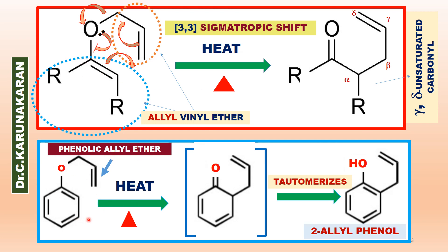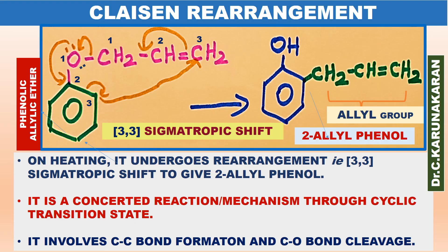Similarly, phenolic allyl ether on heating undergoes a similar type of sigmatropic shift to give an intermediate. This intermediate is very unstable, so it undergoes tautomerization to give 2-allyl phenol. The allyl group migrates to the ortho position.